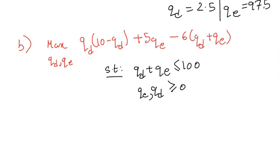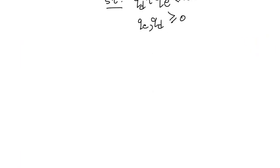Now for the second part, we have the same maximization problem except in this case the marginal cost is 6. In order to solve this problem, we will differentiate with respect to qd and qe to get ∂π/∂qd = 4 - 2qd and ∂π/∂qe = -1.